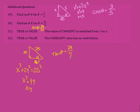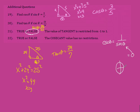Number 21 states the value of tangent is restricted from negative 1 to 1 — that is definitely false. Sine and cosine are restricted from negative 1 to 1, but tangent is not. Number 22 states cosecant has no restrictions — also false. Remember, cosecant equals 1 over sine. If sine of theta equals 0 — which it does at two points on the unit circle where the y-value is 0 — then cosecant is undefined. So cosecant definitely has restrictions.